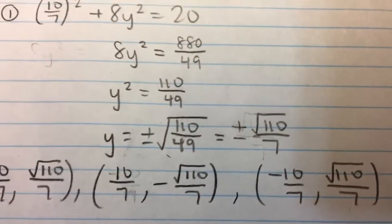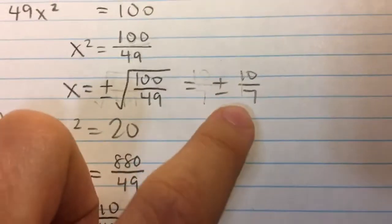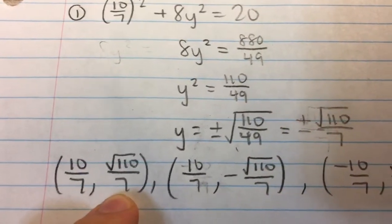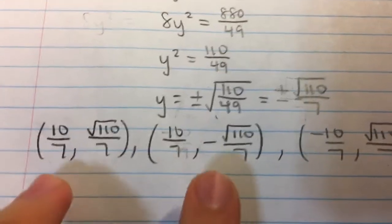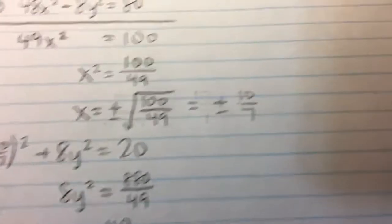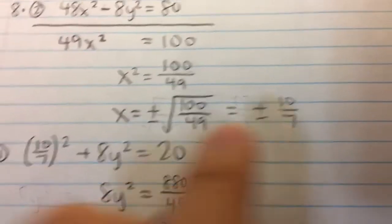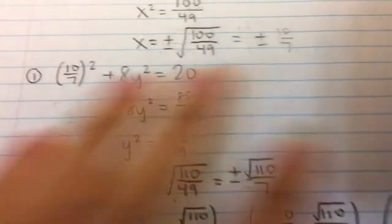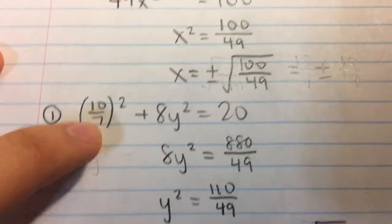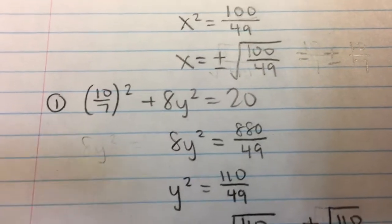And so what this means is that for x equals 10 over 7, there are two solutions: square root of 110 over 7 and negative square root of 110 over 7. Those are the first two solutions. And there are two more solutions. If x is negative 10 over 7, and actually I didn't write it out, but basically if I plugged in here for x, negative 10 over 7, because I'm squaring it, it's still going to become positive.